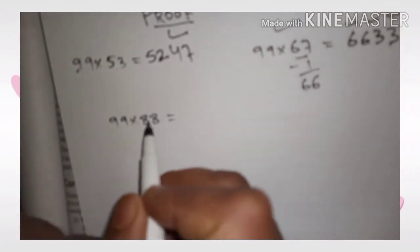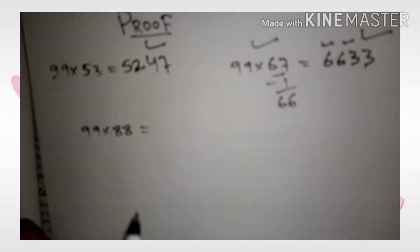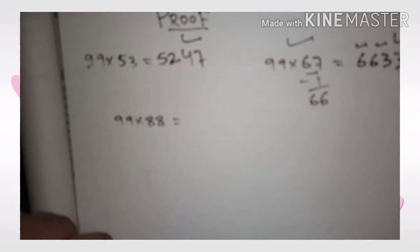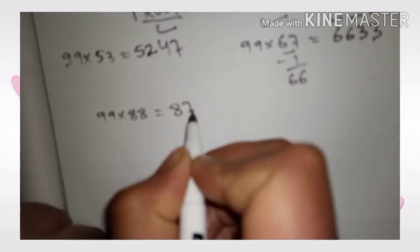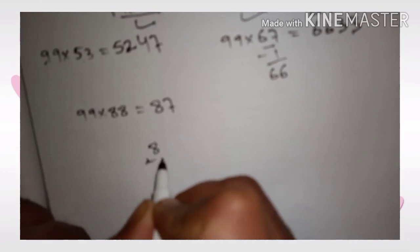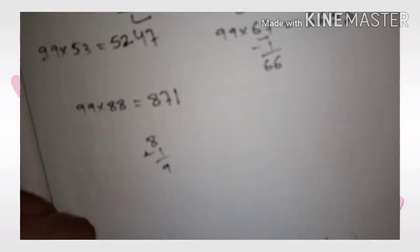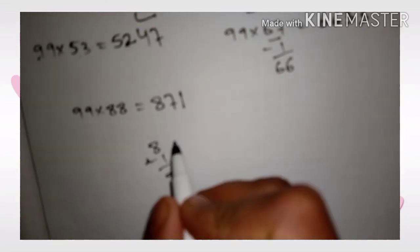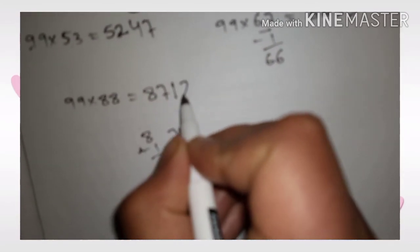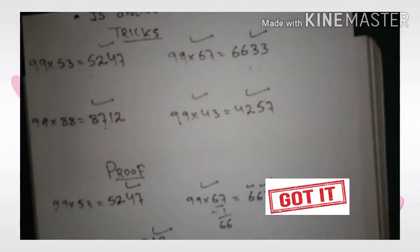Now the last one: 99 into 88. When you multiply 99 into 88, how can you solve it in a second? Yes, first step as we know: we will subtract 1 from 88. When we subtract 1 from 88, we get 87. Now what we add to 8 to get 9? We add 1. That is 8 plus 1 equals 9. So we will write here 1. Again, what we add to 7 to get 9? We add 2. 7 plus 2 equals 9. So here I will write 8712. Is it interesting?